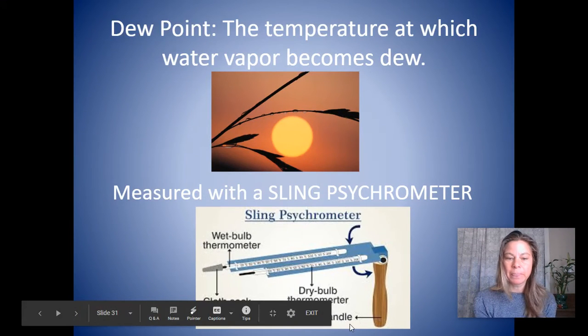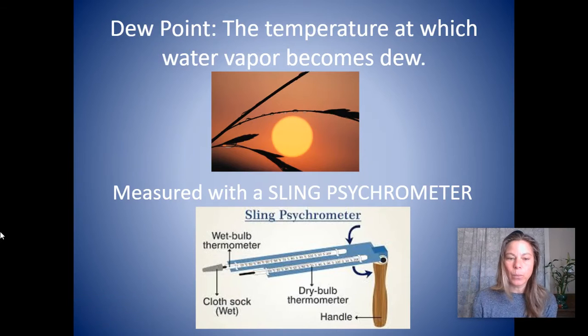Sometimes if you wake up early in the morning, you see all those little water droplets on the grass, or when water vapor in the air comes together and condenses onto some particle and forms water droplets. That's the dew point, the temperature at which water vapor turns into dew. And we measure that with a sling psychrometer. The sling psychrometer has a wet bulb and a dry bulb. The wet bulb just has a little cloth sock at the end that you dip into the water and you sling it around.